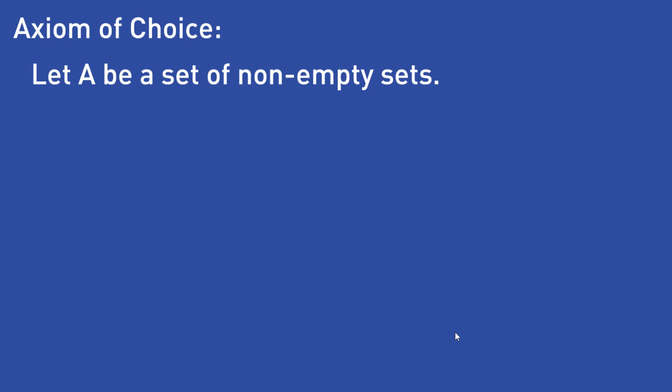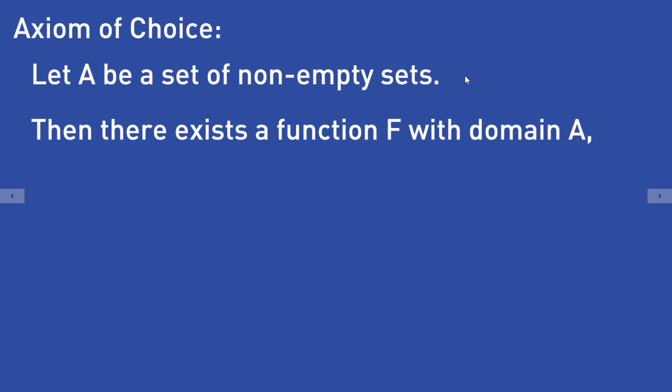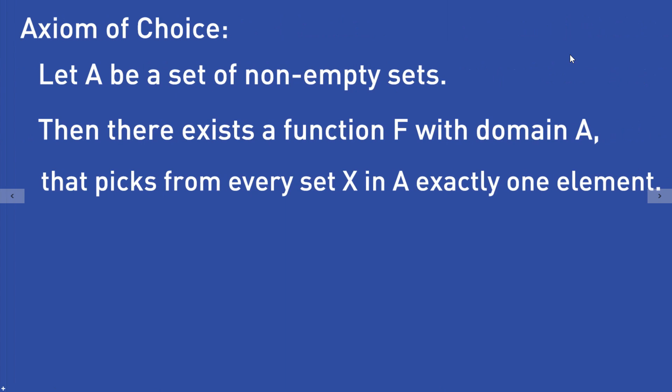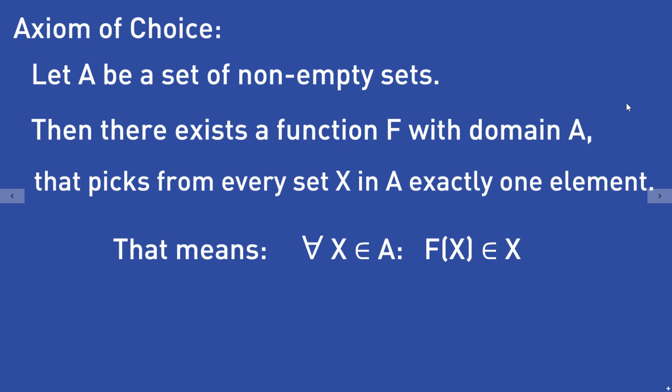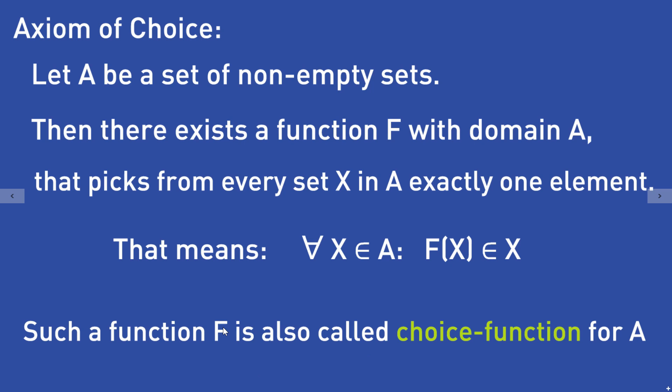Let A be a set of non-empty sets. Then the axiom of choice postulates: there exists a function f with domain A that picks from every set x in A exactly one element. That means there exists a function f so that for all sets x in A, f(x) is in the set x. Such a function f is also called a choice function for A.